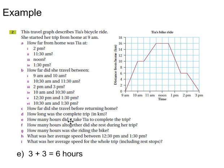E: How many hours did it take Tia to complete the trip? So from 9am to 3pm. 3 hours from 9 till noon, so there's 3 there. And there's another 3 from noon till 3. So 3 plus 3 is 6 hours.